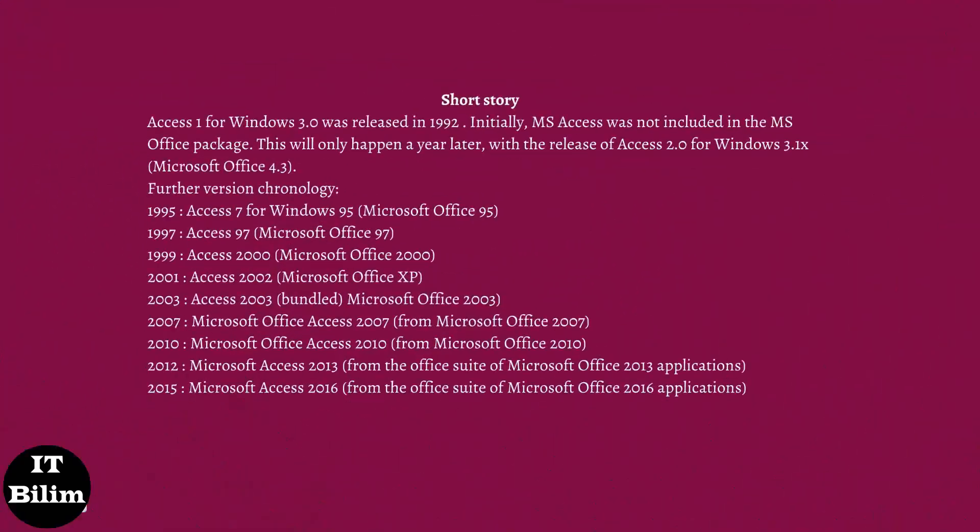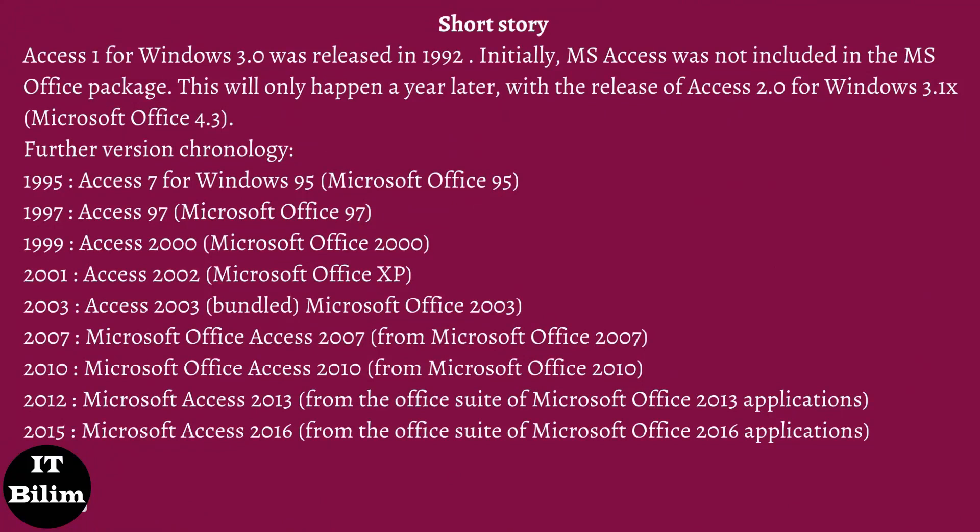Short story. Access 1 for Windows 3.0 was released in 1992. Initially, Microsoft Access was not included in the Office package. This only happened a year later with the release of Access 2.0 for Windows with Microsoft Office 4.3. Further version chronology: 1995, Access 7 for Windows 95 / Microsoft Office 95; 1997, Access 97 / Microsoft Office 97; 1999, Access 2000 / Microsoft Office 2000; 2001, Access 2002; 2003, Access 2003 bundled with Microsoft Office 2003.